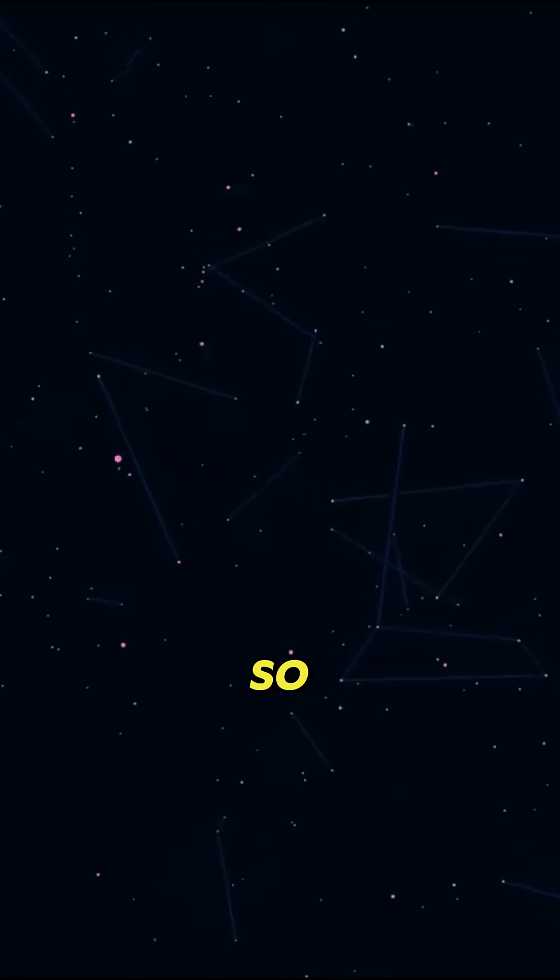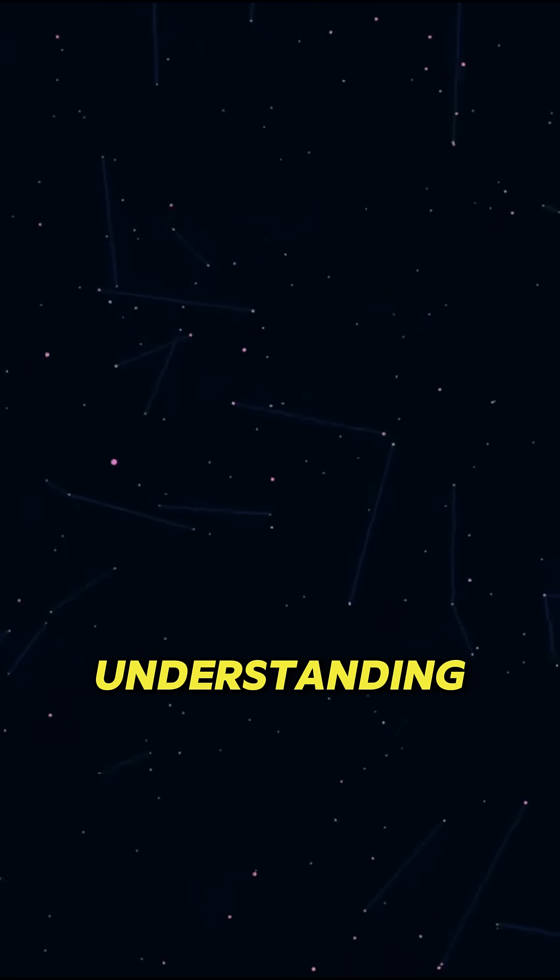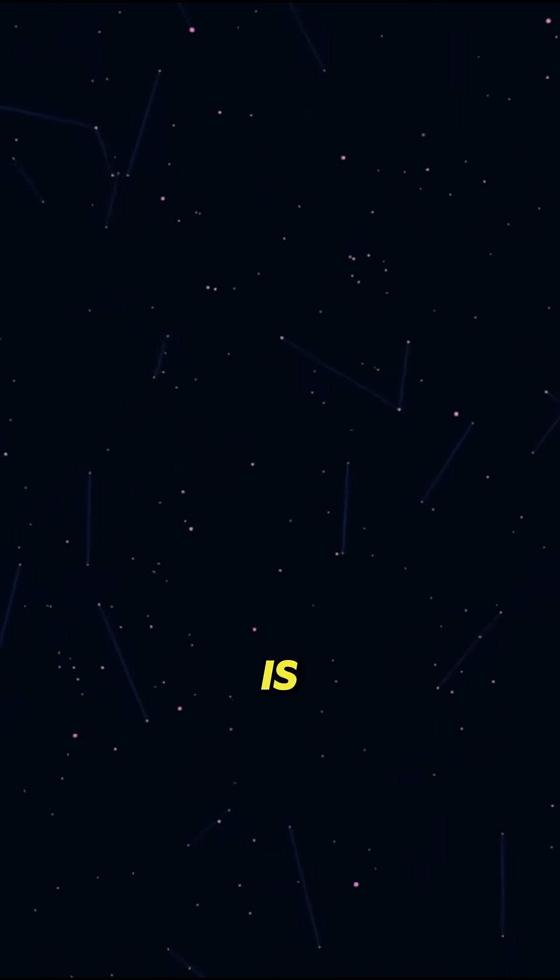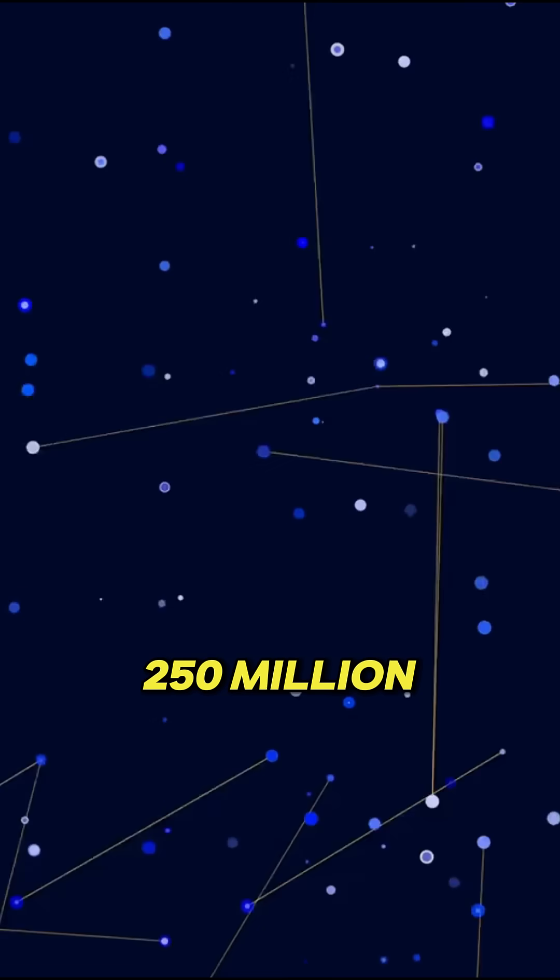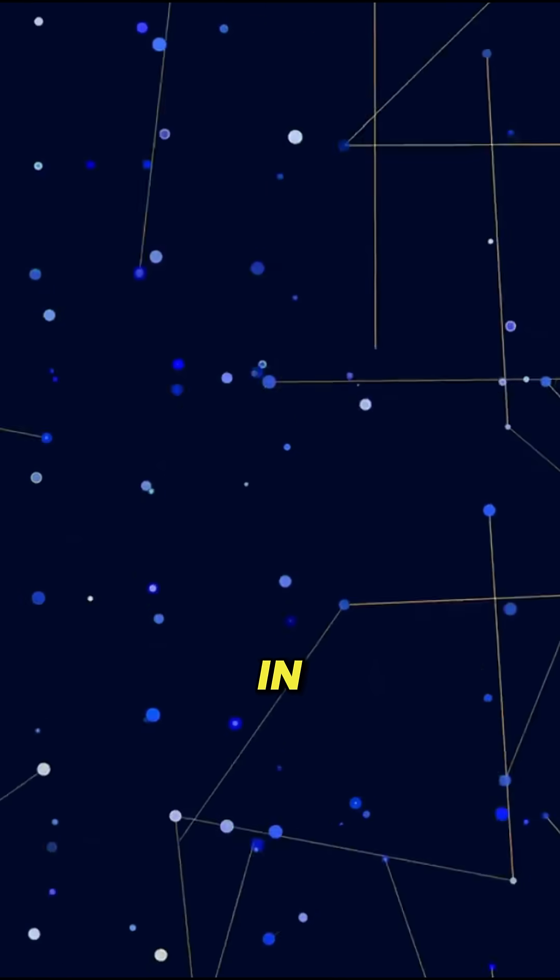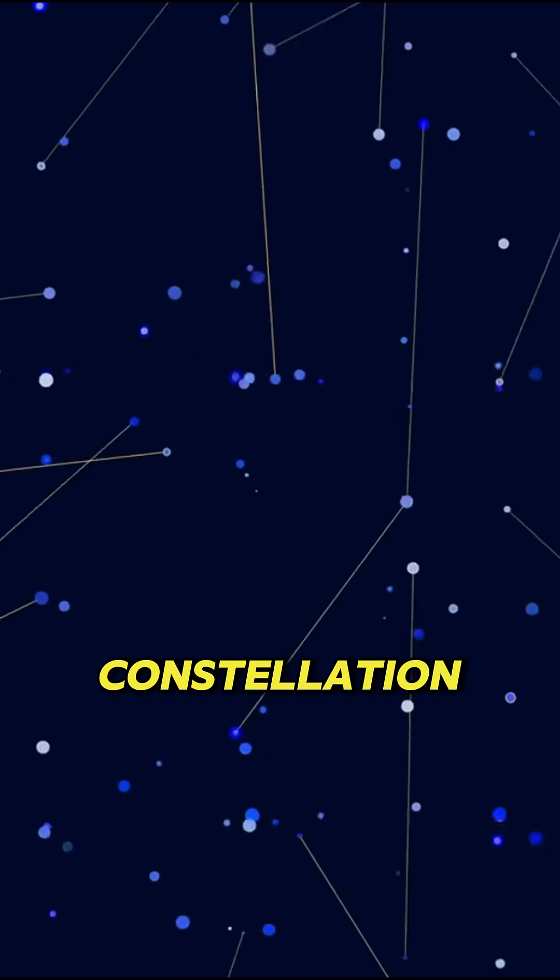Imagine a colossal object, so enigmatic that it defies our understanding of physics. This is the Great Attractor, a gravitational anomaly located about 250 million light-years away in the direction of the Centaurus constellation.